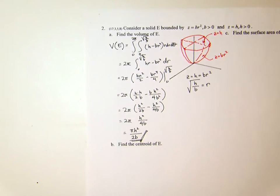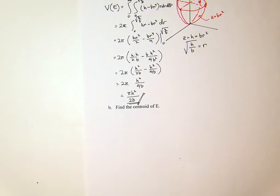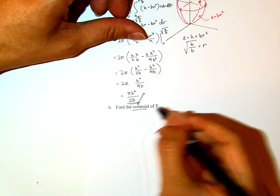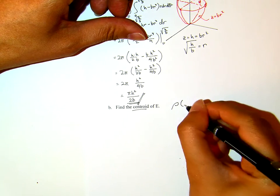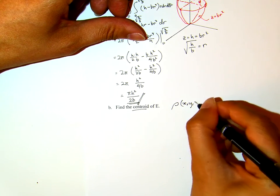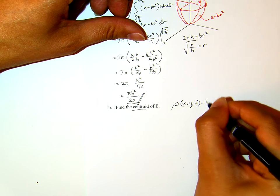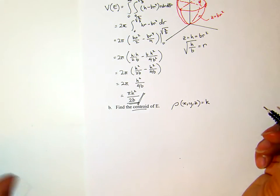Now, find the centroid of E. When we say centroid, that means the density ρ of x, y, z is a constant. Don't forget this one.